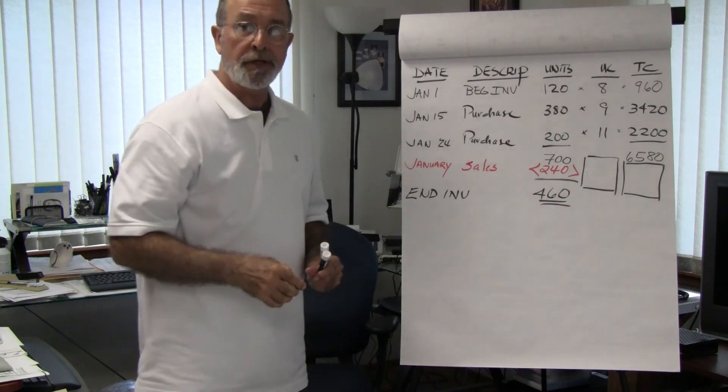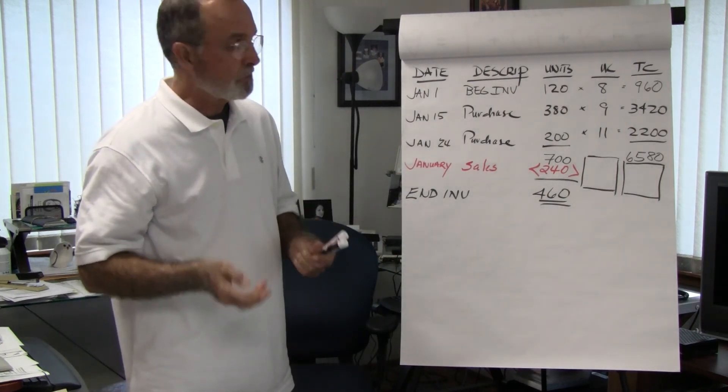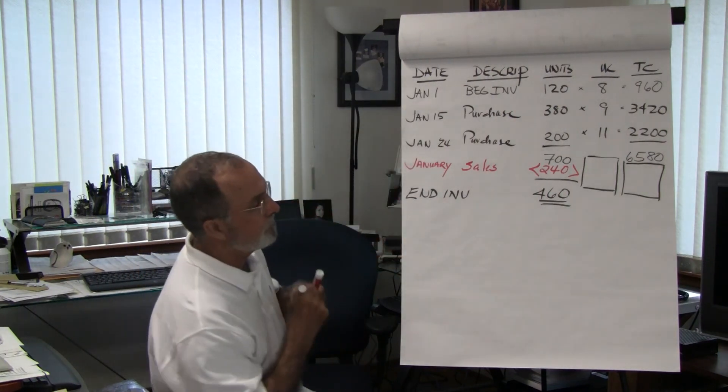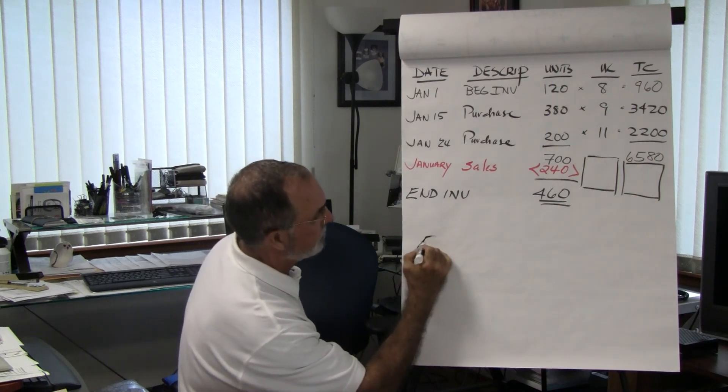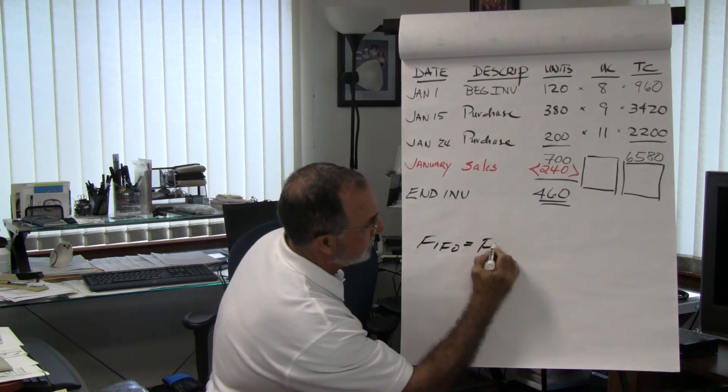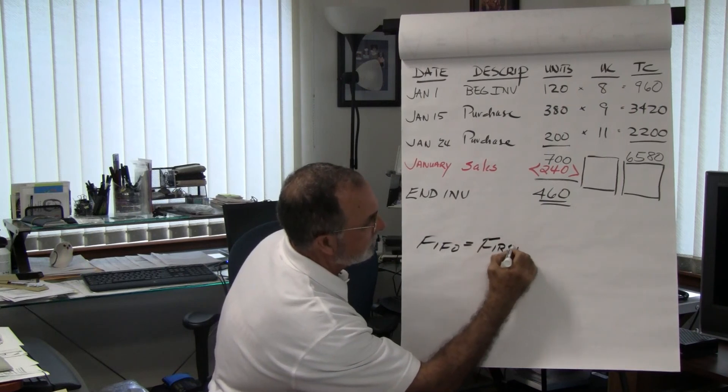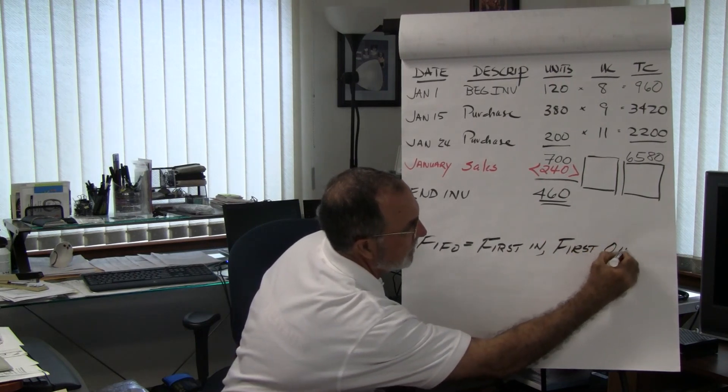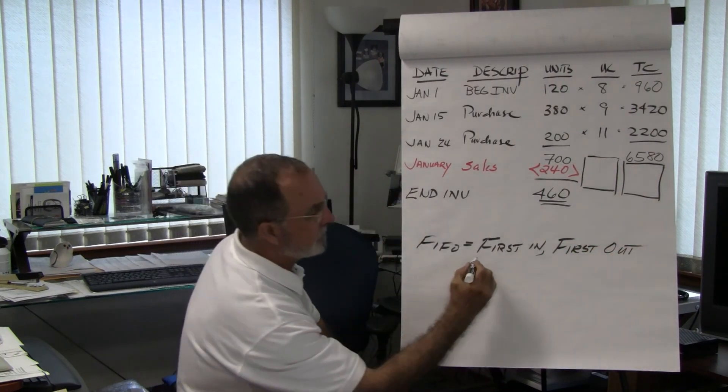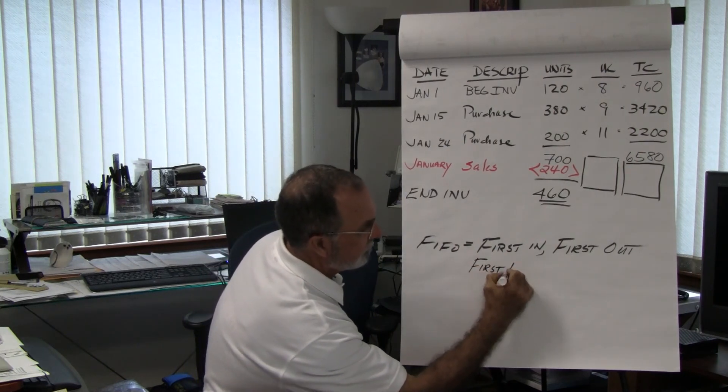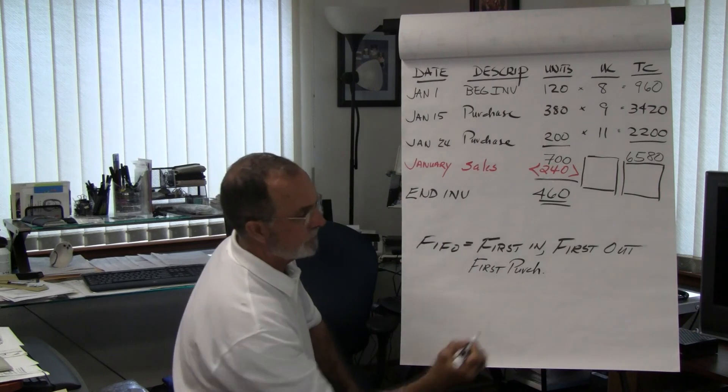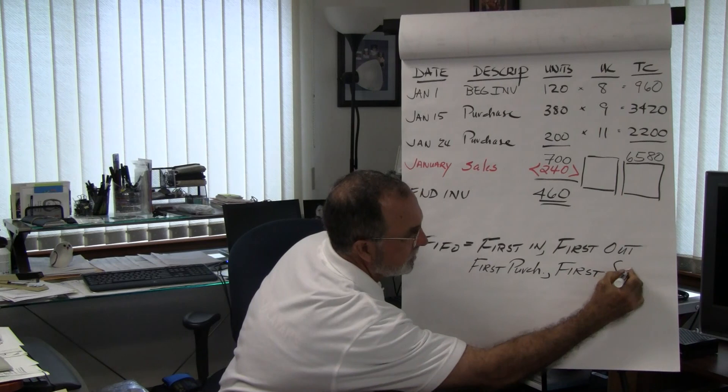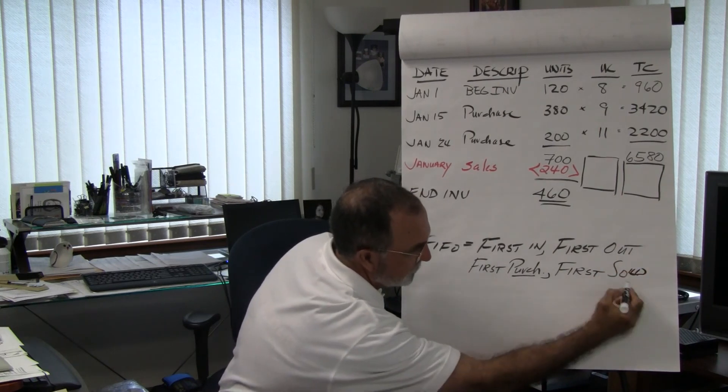So, which units were sold during the month of January? Again, it will depend on what cost flow assumption we use. And so, the first one we want to use is FIFO. The FIFO cost flow assumption basically says first in, first out. And what this really means is first purchased, first sold.